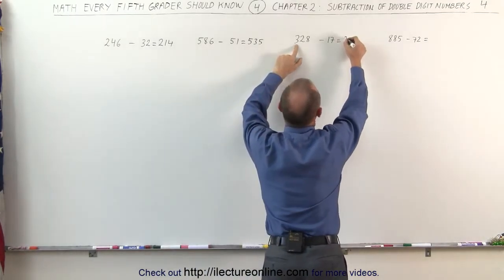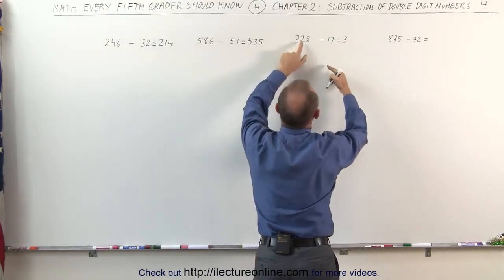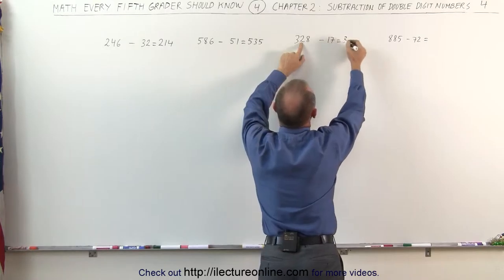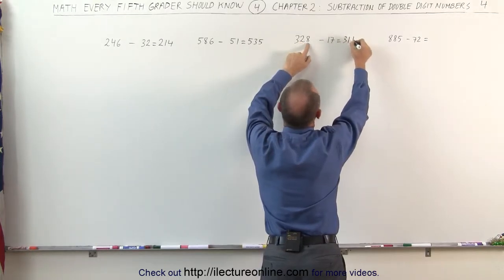Here, the 3 remains intact, because 17 is smaller than 28. 2 minus 1 is 1, 8 minus 7 is 1.